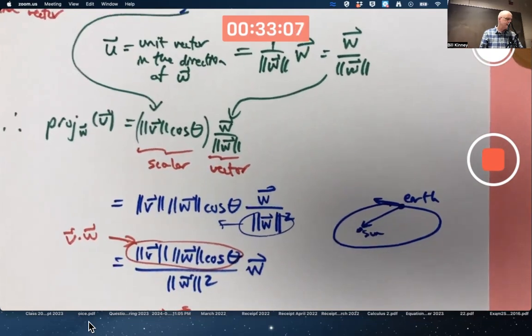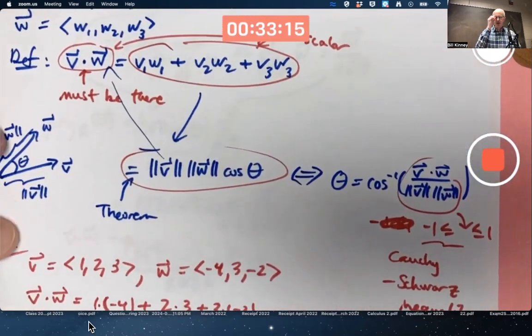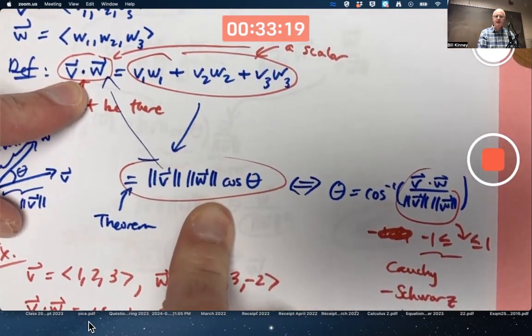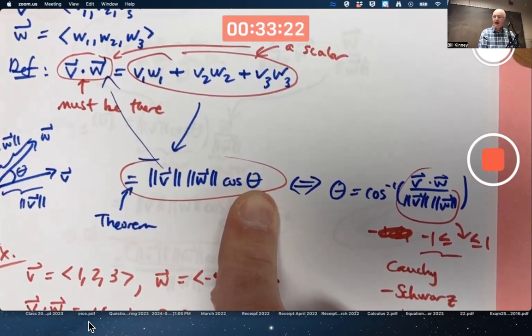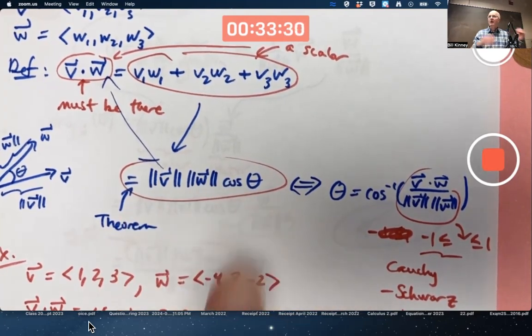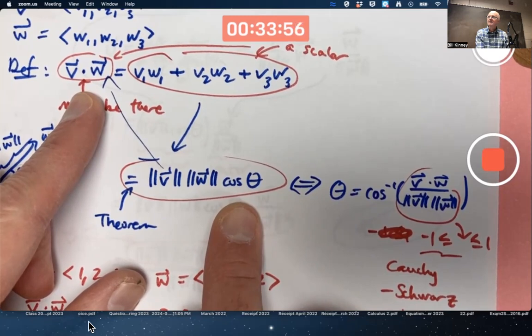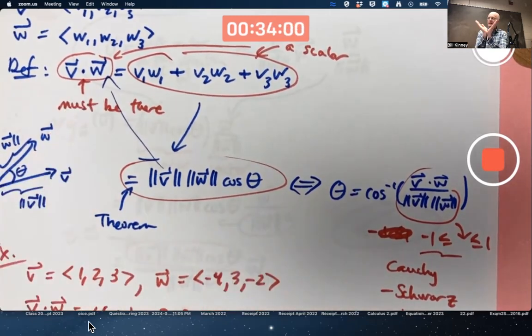An important special case of all this is when the dot product is zero. What happens when the dot product is zero? If V dot W is zero, then this thing is zero. That can happen even if V and W themselves are not the zero vector, as long as the cosine of the angle is zero. Cosine of 90 degrees is zero, pi over two radians. The dot product being zero tells you the vectors are perpendicular. More generally called orthogonal. That's synonymous with perpendicular. The dot product is zero, the angle is 90 degrees, pi over two radians. They are perpendicular or orthogonal.